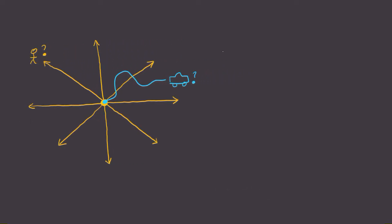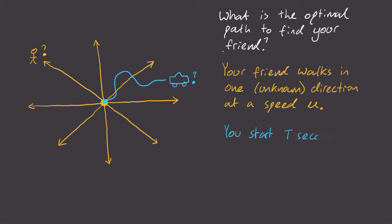A friend of yours is lost in a sandstorm. He walks in an unknown direction to try and find help. You arrive at the starting point sometime later in a car. The visibility is horrible and the only information you know is his walking speed and that he's walking in a straight line. What is the optimal path you should drive such that you meet up with your friend? Can you solve it?